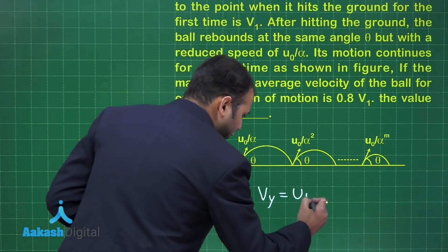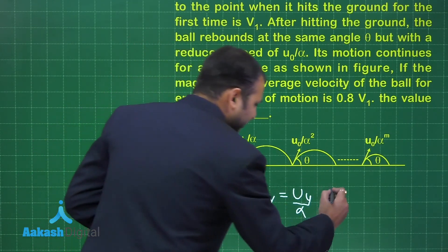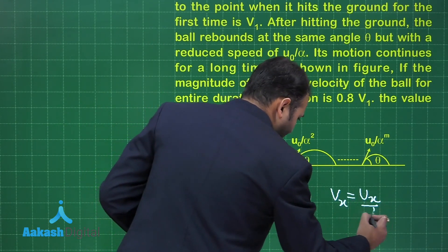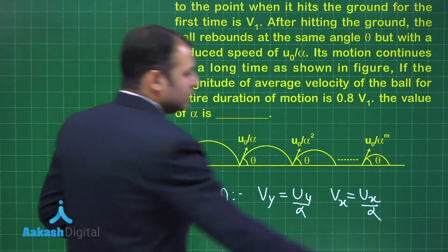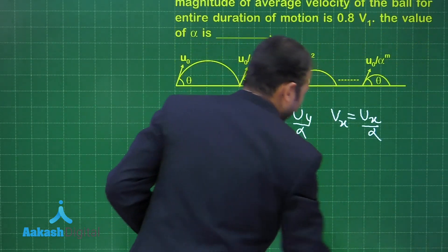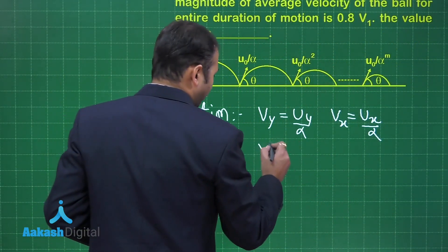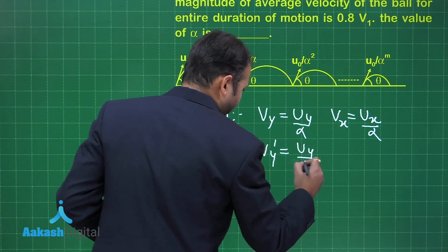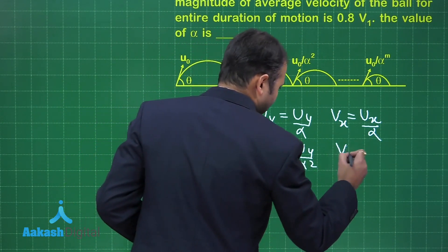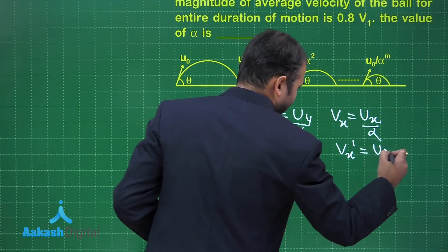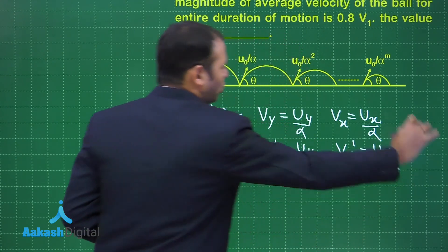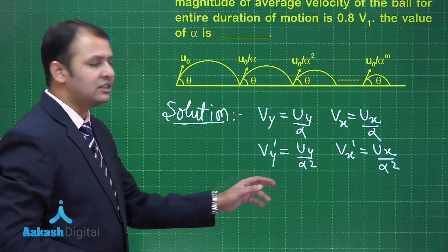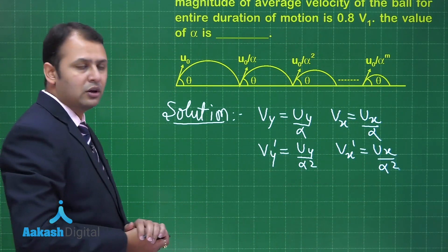When we write the solution, after the first collision v_y becomes u_y divided by alpha, and v_x becomes u_x divided by alpha. After the second collision, v_y becomes u_y divided by alpha squared, and v_x becomes u_x divided by alpha squared, and so on. After every collision, v_y and v_x keep decreasing by a factor of alpha.